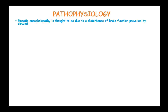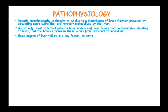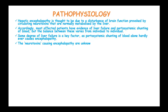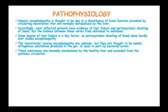Hepatic encephalopathy is thought to be due to disturbance of brain function provoked by circulating neurotoxins which are normally metabolized by the liver. Most affected patients have evidence of liver failure and portosystemic shunting of blood, but the balance between these varies from individual to individual. Some degree of liver failure is a key factor, as portosystemic shunting of blood alone hardly ever causes encephalopathy. The neurotoxins causing encephalopathy are unknown, but are thought to be mainly nitrogenous substances produced in the gut, at least in part, by bacterial action.